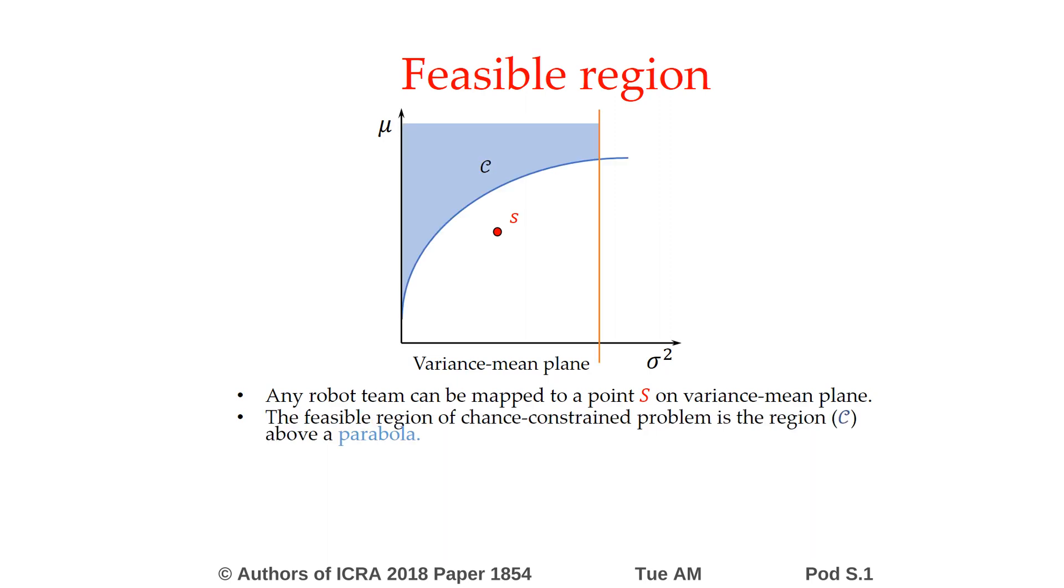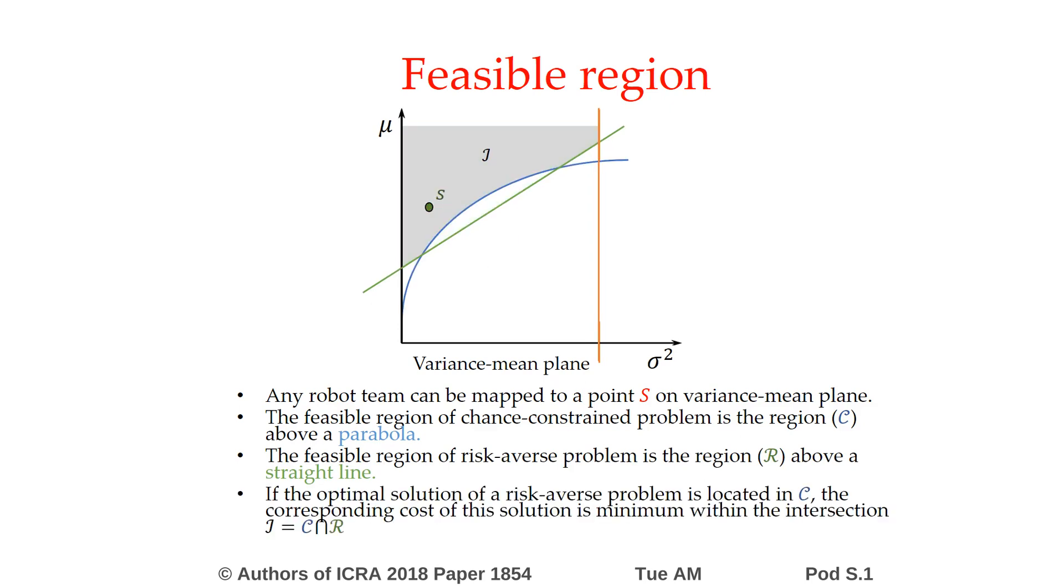The feasible region for the chance-constrained knapsack problem is the blue region above a parabola, while the feasible region for the risk-averse knapsack problem is the green region above a straight line. If the optimal solution of the risk-averse problem is located in the feasible region of the chance-constrained problem, the corresponding cost of this solution is minimum within the intersection between the two feasible regions.